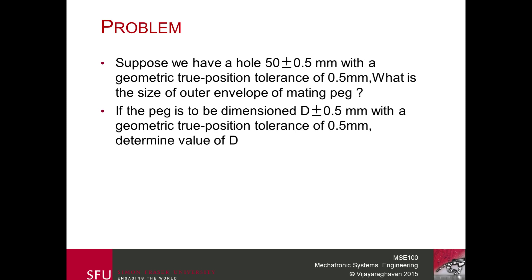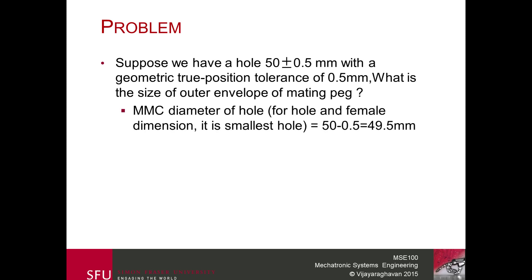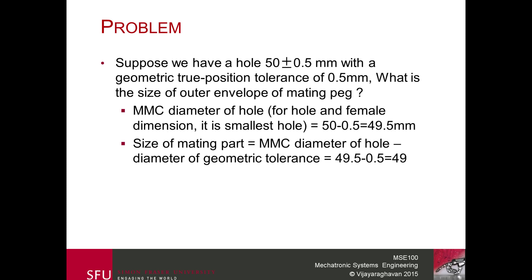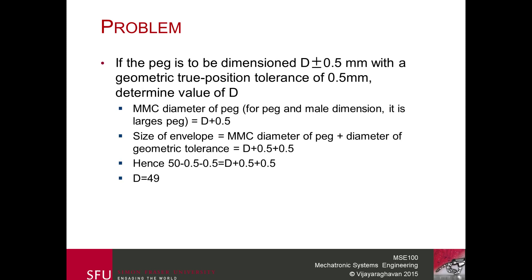The question is: what is the size of the inner envelope for the hole, i.e., the outer envelope of the mating peg? If the peg is dimensioned as d plus or minus 0.5 with a geometric true positional tolerance of 0.5, what is the maximum allowable value for d? The MMC diameter for the hole is the smallest hole, which is 50 minus 0.5 = 49.5. Subtract the geometric tolerance to get 49.5 minus 0.5 = 49.